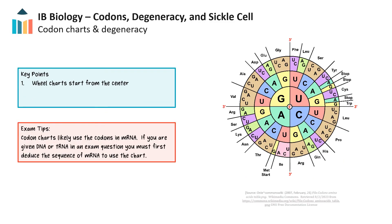Now that we understand the genetic code is universal in the code for amino acids, let's take a look at how we can decode a nucleotide sequence with a codon chart or codon tables. The table is a model of the genetic code and it illustrates the association between nucleotide triplets or codons and the specific amino acids that they encode, as well as the start and stop signals for polypeptide synthesis.